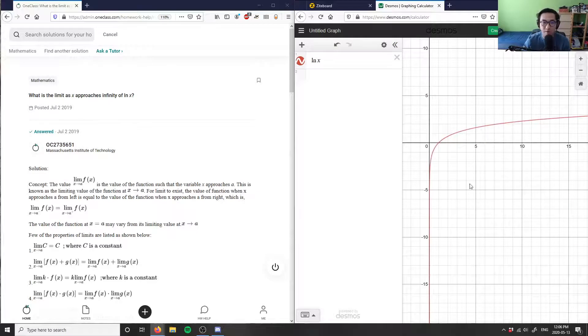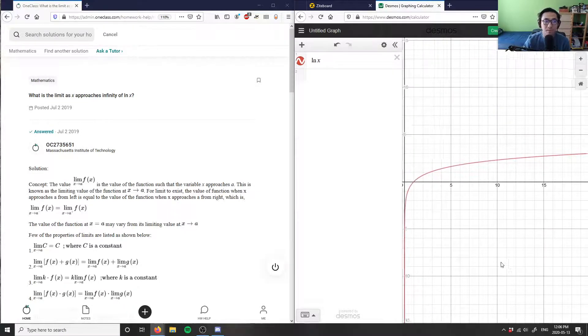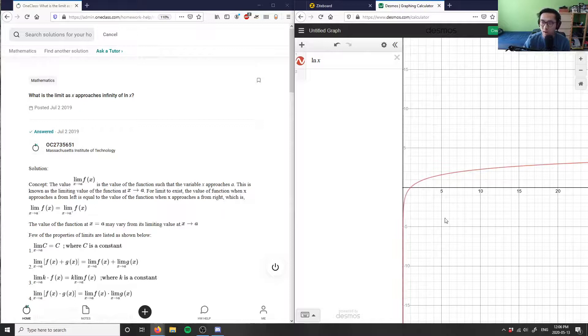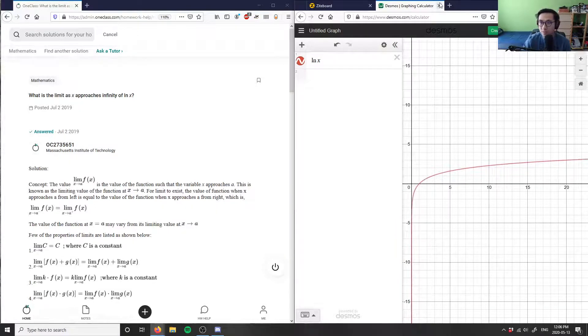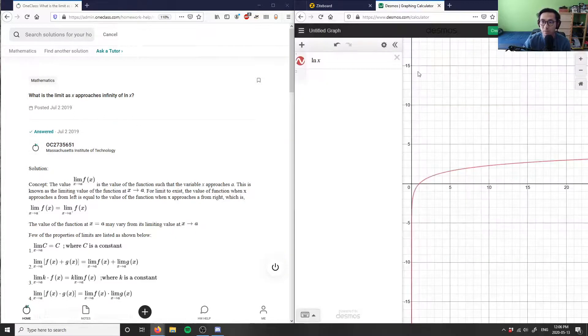As x approaches infinity, it's going to steadily increase. So here's our function, and it's asking us what is the limit as x approaches infinity. If x approaches infinity, where will my y go? My y will also approach infinity.